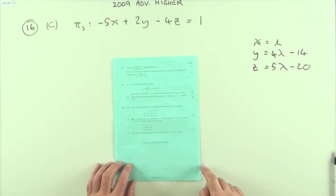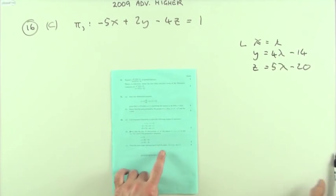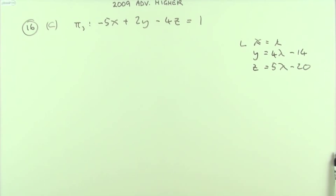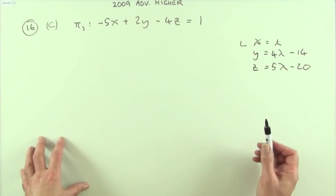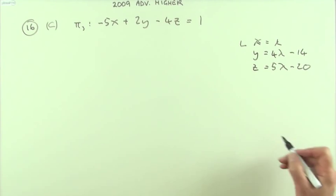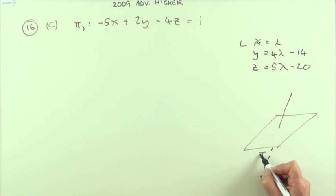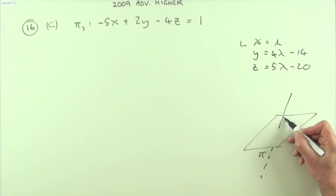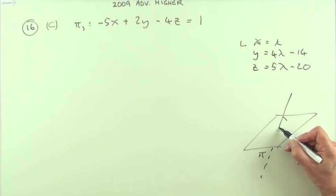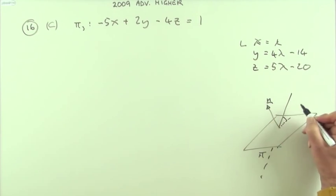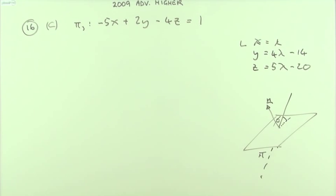Part c: find the acute angle between line L and the third plane. Sketching it: you have the plane and the line cutting through it. The angle between the line and the plane is the angle between the line and its projection onto the plane. In practice, find the angle between the line and the normal to the plane, then subtract from 90° — or equivalently use sine instead of cosine.